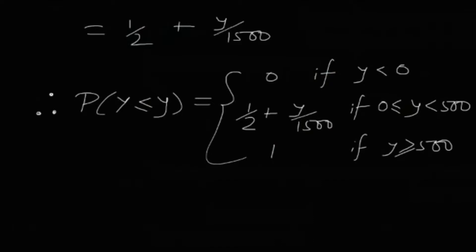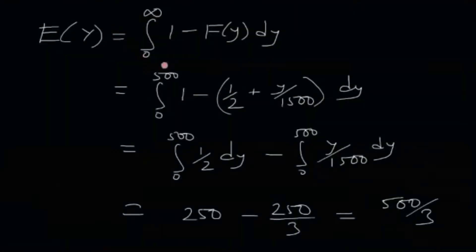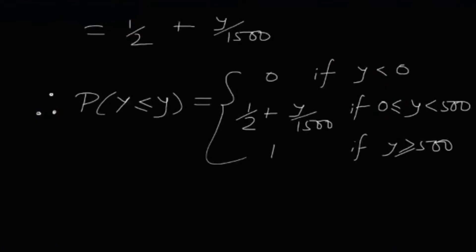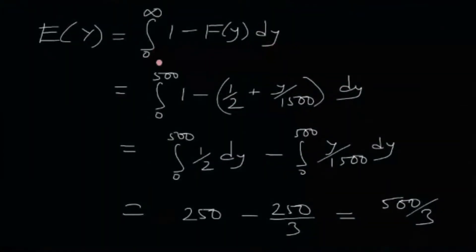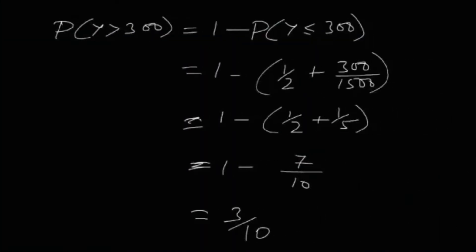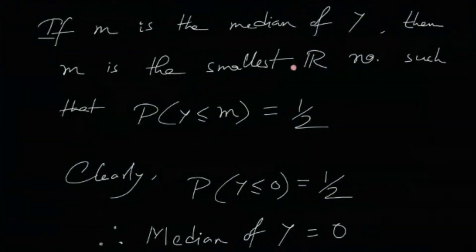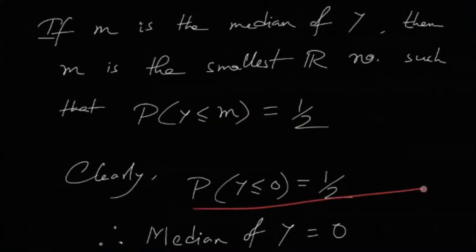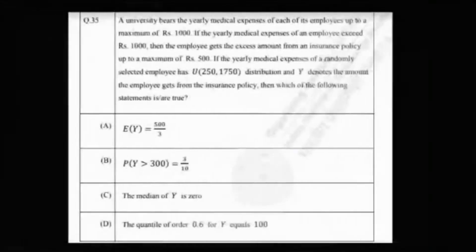Since Y is a mixed random variable, E[Y] = integral from 0 to infinity of (1 − F(y)) dy, which gives 500/3. So option A is correct. P(Y > 300) = 1 − P(Y ≤ 300) = 1 − (1/2 + 300/1500) = 3/10, so option B is also correct. The median m is the smallest real number such that P(Y ≤ m) ≥ 1/2. Since P(Y ≤ 0) = 1/2, the median of Y is 0, so option C is also correct.